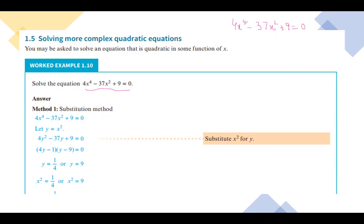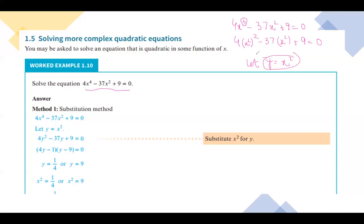First, analyze that the highest power is now 4. In the previous lecture, the highest power was of degree 2. So we need to replace this. We can write it as (4x²)² minus 37x² plus 9 equals to 0. Let y equal to x², substituting this value into the equation gives us 4y² minus 37y plus 9 equals to 0.